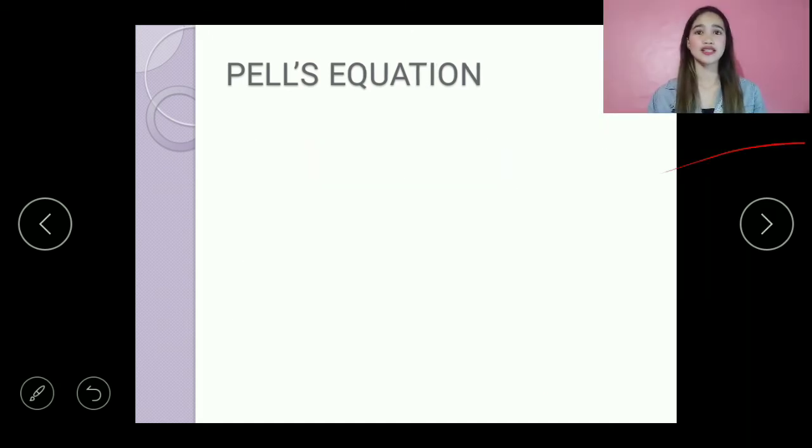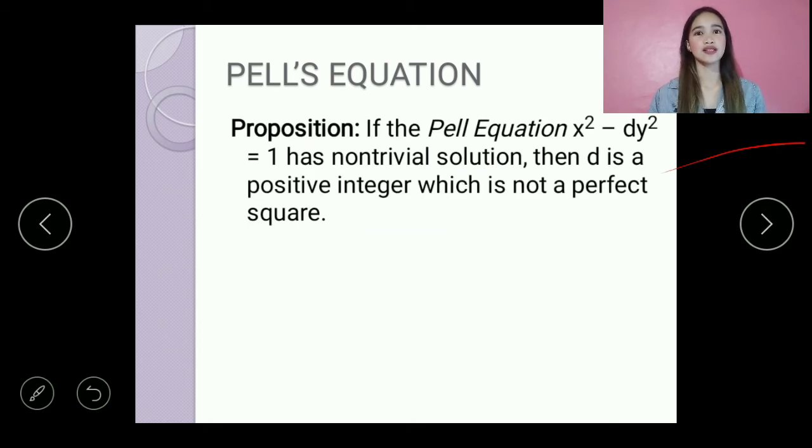In Pell's equation, we have a proposition. If the Pell's equation x squared minus dy squared equals 1 has a non-trivial solution, then d is a positive integer which is not a perfect square.